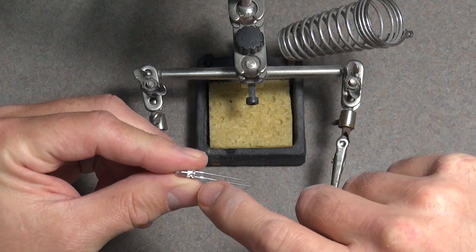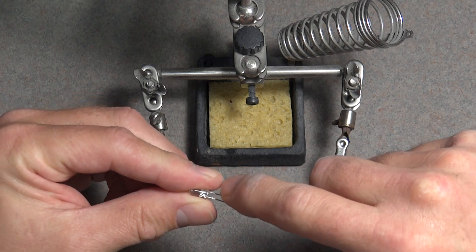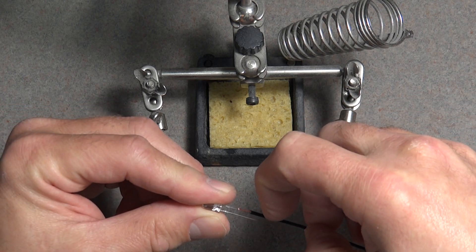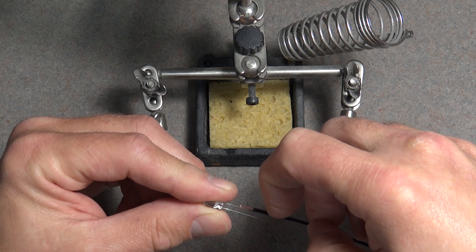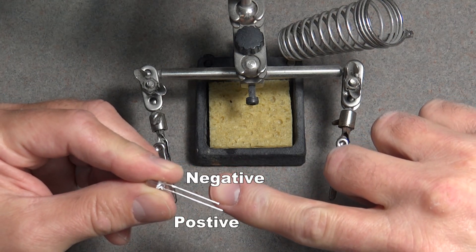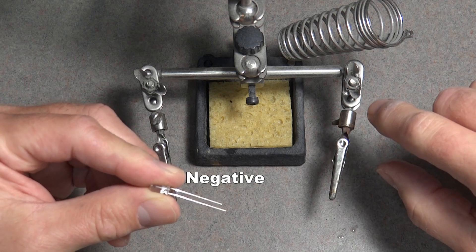Feel free to trim a little bit off the ends of the resistor or LEDs to save space, if needed. If you do this to an LED, make sure you pay close attention to which lead is positive and which one is negative, as the original length is what you use to differentiate between the two.